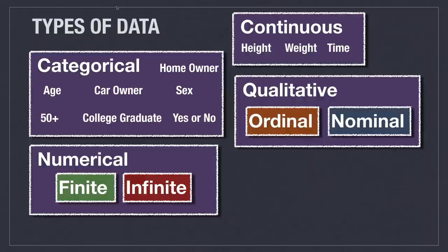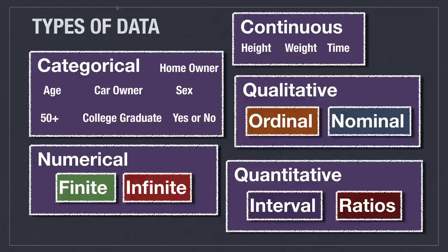Qualitative data can be either nominal, meaning that it is named data — mainly data for naming something which doesn't have an order. For example, race would be an example, because there are many different races but there is no order to them. Ordinal data is also named, but it has an order, and examples would be things like bad, okay, good, or great. Quantitative data is like a ratio or interval — an amount between two defined amounts. For example, you could say pick a number between 8 and 16. That would be an example of quantitative data.